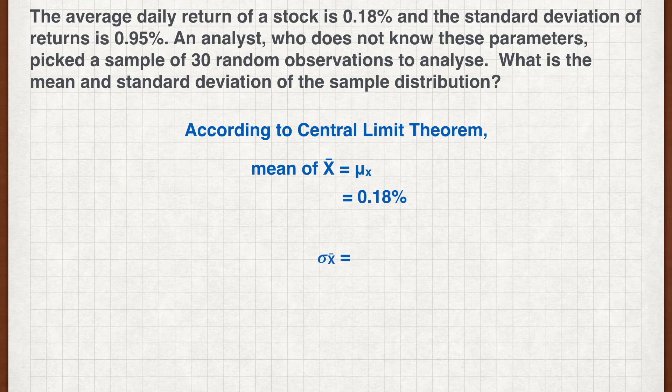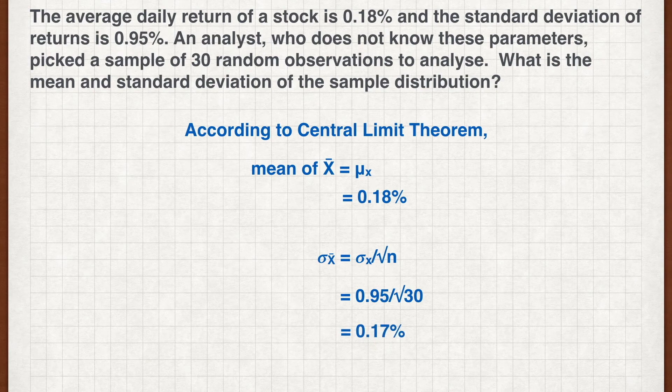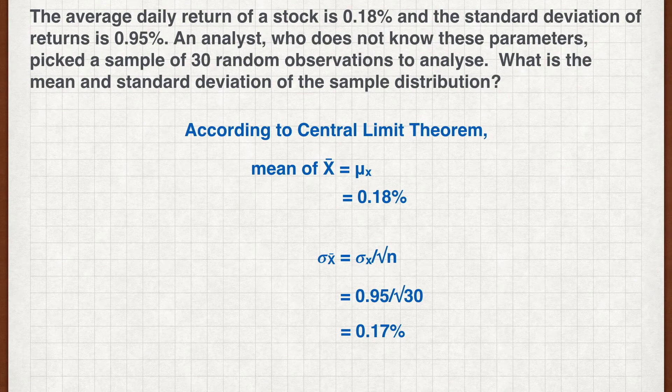The standard deviation of the sample mean is the standard deviation of the population, divided by the square root of n. Dividing 0.95 by the root of 30, we get an answer of 0.17%.